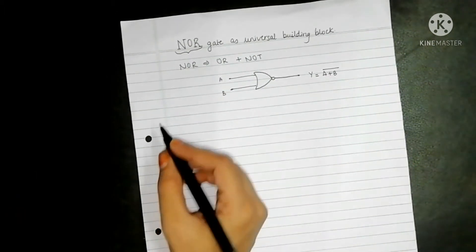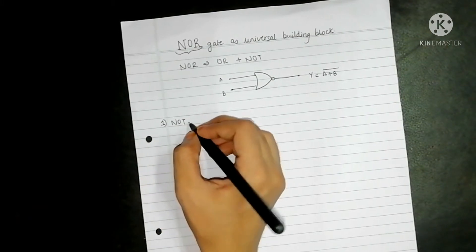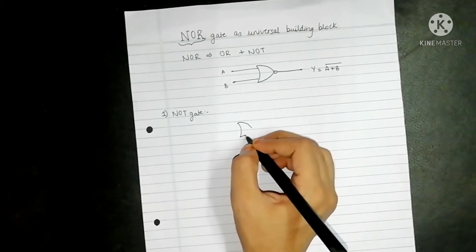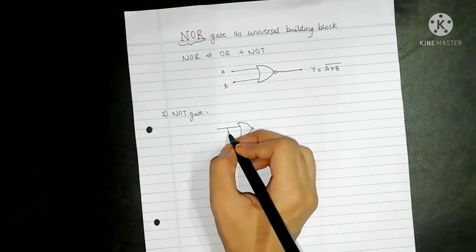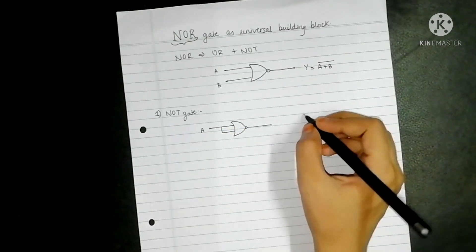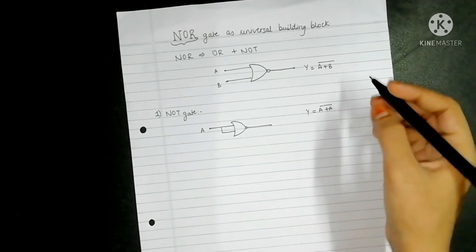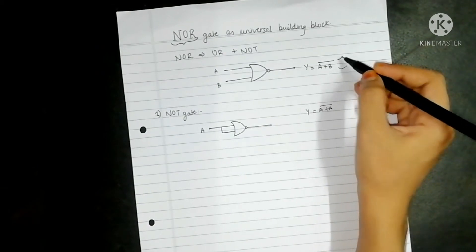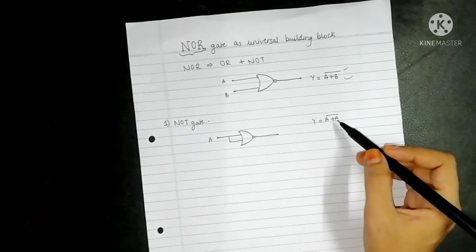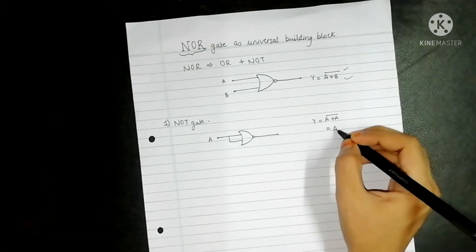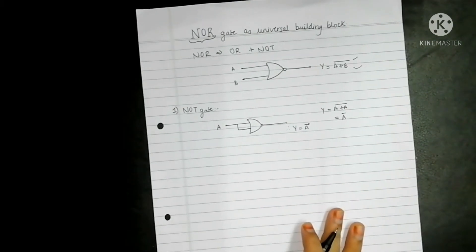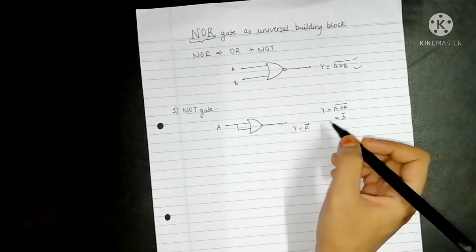First we will construct the NOT gate, or the inverter gate, using NOR. For that I will use one NOR gate and supply it with the same input A. The output will be Y equals A plus A, the whole bar. Since A plus A equals A, this simplifies to Y equals A bar. So whenever you supply the same input to both terminals of a NOR gate, it acts as an inverter.